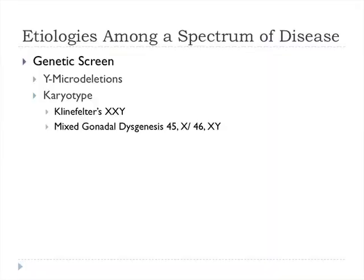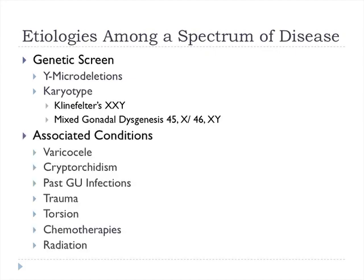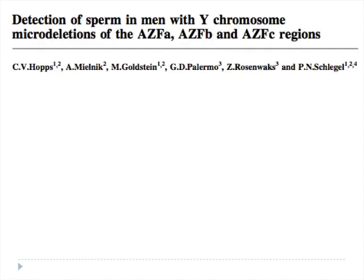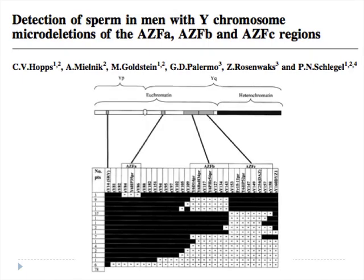Genetic screening can identify those with Y microdeletions and karyotype abnormalities. Y microdeletions occur in approximately 13% of non-obstructive azoospermic patients. One study of 78 patients with AZF deletions ran PCR for 30 sequence tags in the AZF region across three domains — AZF-A, B, and C. AZF-C is the most common, followed by B, and A is the least common. Regarding sperm retrieval, AZF-C is the only domain where sperm retrieval may be possible; AZF-A and B have had no reported sperm retrieval.